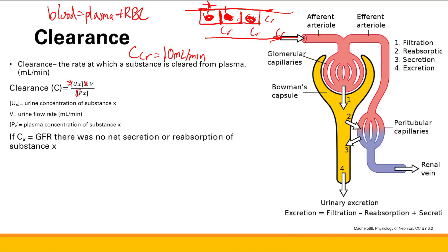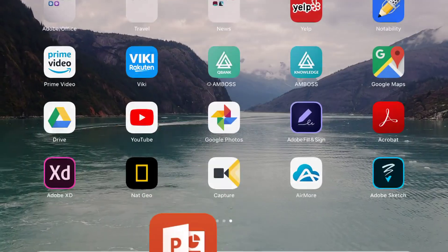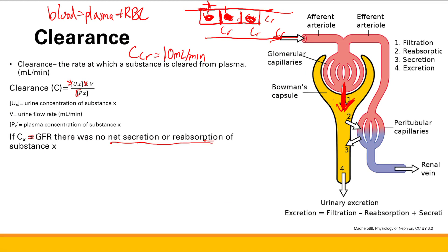If the clearance of a substance is equal to the GFR, this means there is no net secretion or reabsorption of the substance. If the amount we filter through is exactly the same amount we excrete, there is no net secretion or reabsorption. Note that secretion and reabsorption happen in the tubules after we filter through the glomerulus — you can still have both, but there is no net change, so what is excreted equals what was filtered.